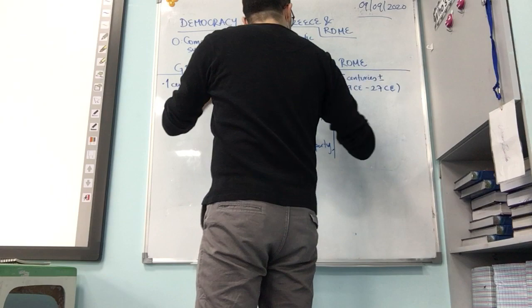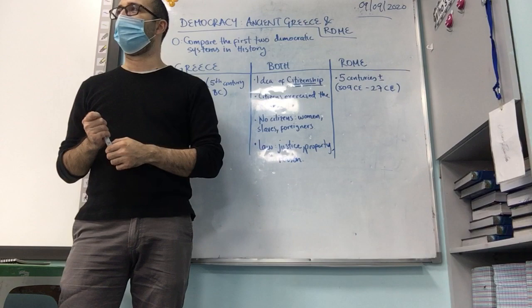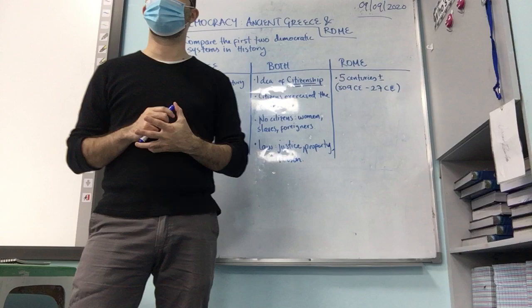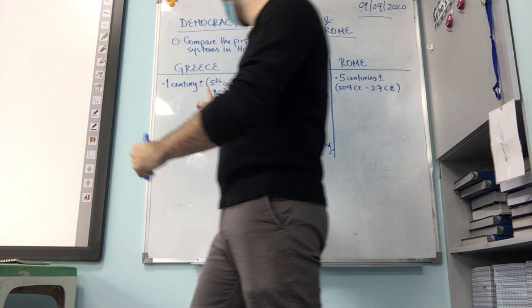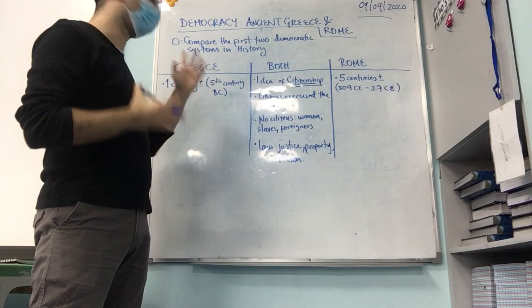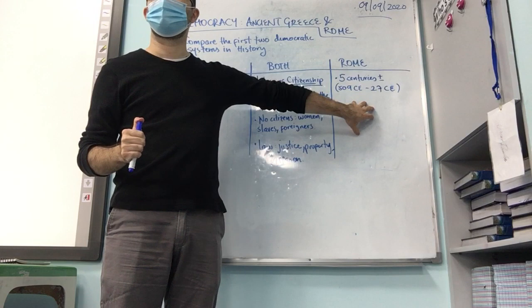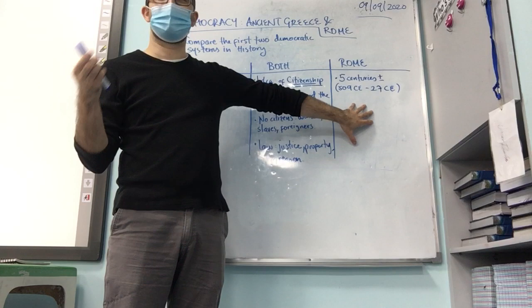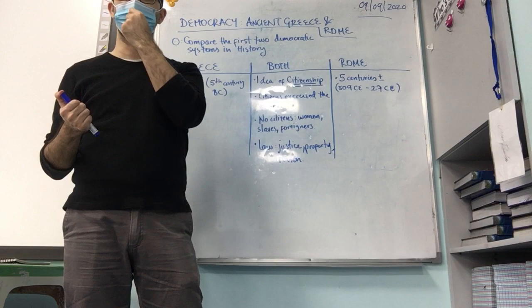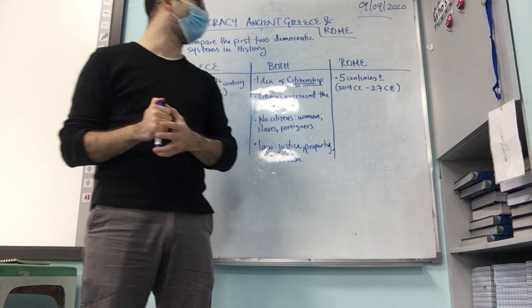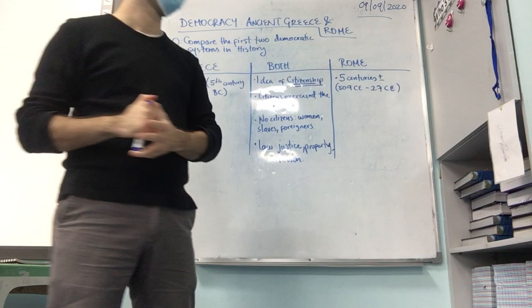The first thing that they have different is the time of these democracies. In ancient Greece, democracy only remained during one century, more or less — the fifth century before Christ. Rome used democracy as a system during five times the Greek democracy, five centuries more or less, from 509 BCE to 27 CE. So this period is before Christ, and this other is after Christ.